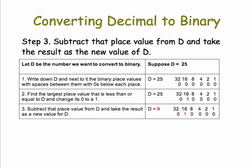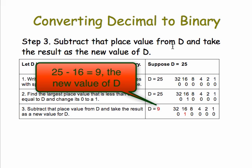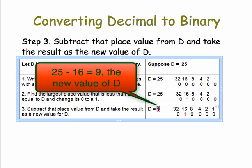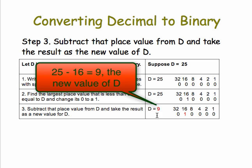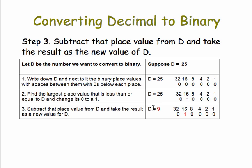Step three: subtract that place value, namely 16, from d and make the result the new value of d. So 25 minus 16 gives us 9. I'm putting the 9 there — that gives us a new value for d.